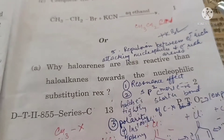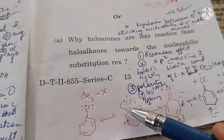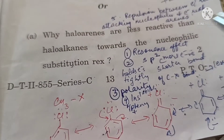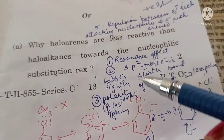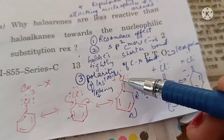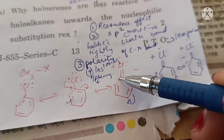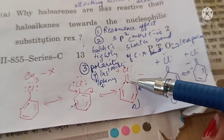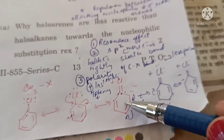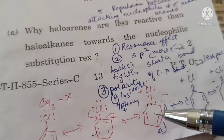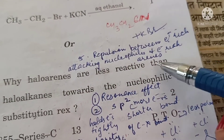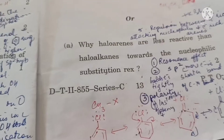Why are haloarenes less reactive than haloalkanes towards nucleophilic substitution? Because of resonance, partial double bond character arises in the carbon–halogen bond, making it difficult to break. The sp² carbon atom is more electronegative and pulls electrons towards itself, making the bond shorter and harder to break. The polarity of the bond decreases and the stability of the phenyl carbocation is very low.